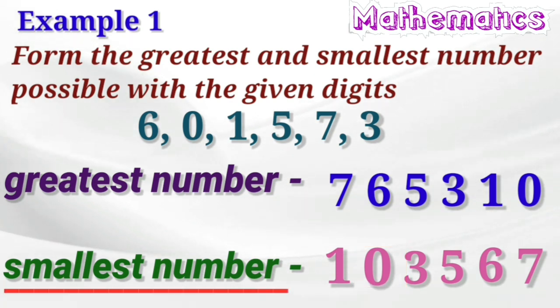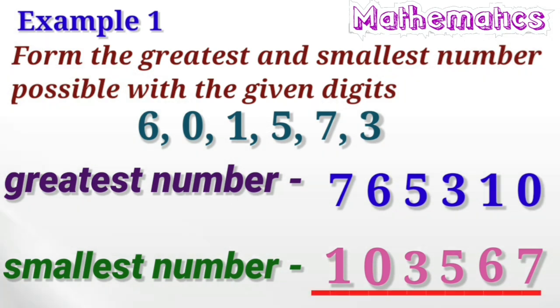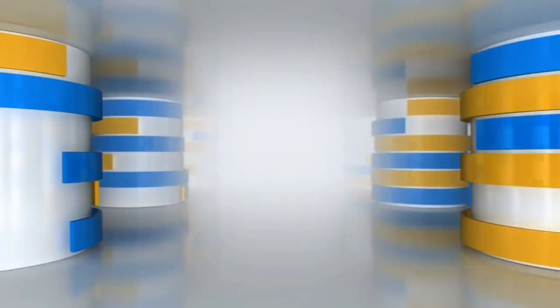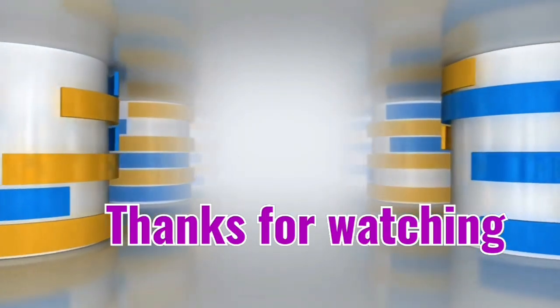So, we make the smallest number 103567 from the given digits.